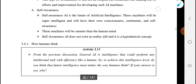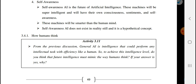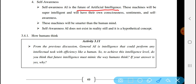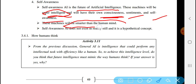The fourth functionality-based type is the Self-Aware Machine. A self-aware machine is a future stage of Artificial Intelligence. These machines will be super intelligent and will have their own consciousness, sentiment, and self-awareness. They will be smarter than the human mind. Self-awareness does not yet exist in reality and remains a hypothetical concept.